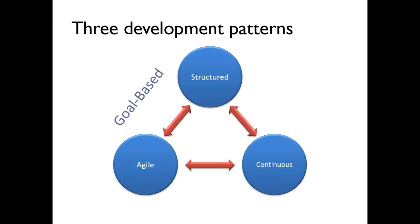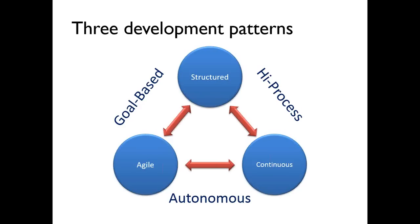My suggestion is that agile and structured — waterfall, if you like — do have some things in common: they are both goal-based, very focused on an end goal. Agile and continuous are much more focused on delivery through autonomous teams as opposed to top-down structured hierarchies. But there's a big commonality between structured and continuous in that structured is high process — and so is continuous, because much of it is automated and requires very high discipline.